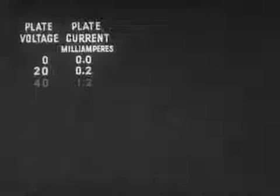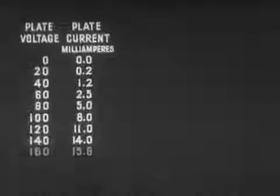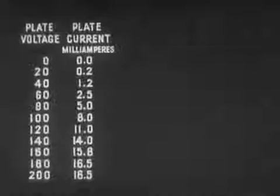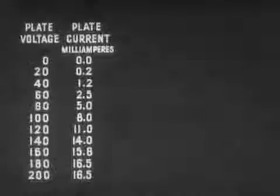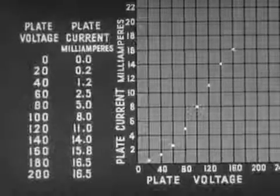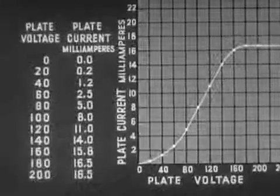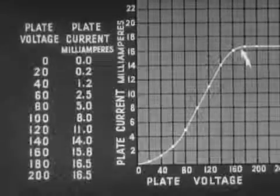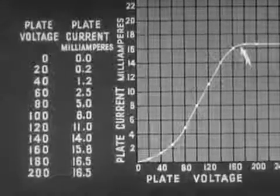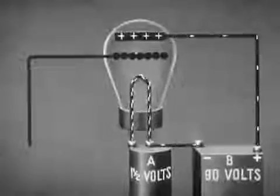If the voltage on the plate is increased, the plate current will increase, since more electrons will be attracted because of the higher positive charge. With ordinates representing voltage and current, we can trace a curve to show this relationship. Note the saturation point, beyond which there is no increase in plate current even when the voltage is increased.